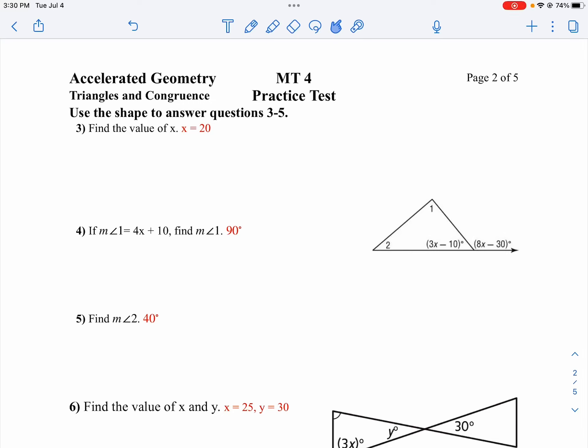We're going to use the triangle given to find the answers to questions 3 through 5. First thing I want to do is find x. Notice on this problem my two angles add to 180. So that's what I'll use on problem number 3.